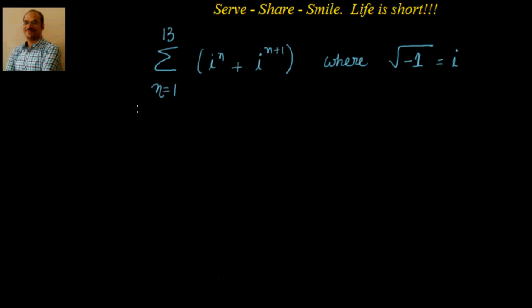Hello friends, welcome back, Hattie welcome to you. Let's look at this interesting example related to complex numbers. We have to find out sigma, that means sum of the expression i^n + i^(n+1) where n values range from 1 to 13.